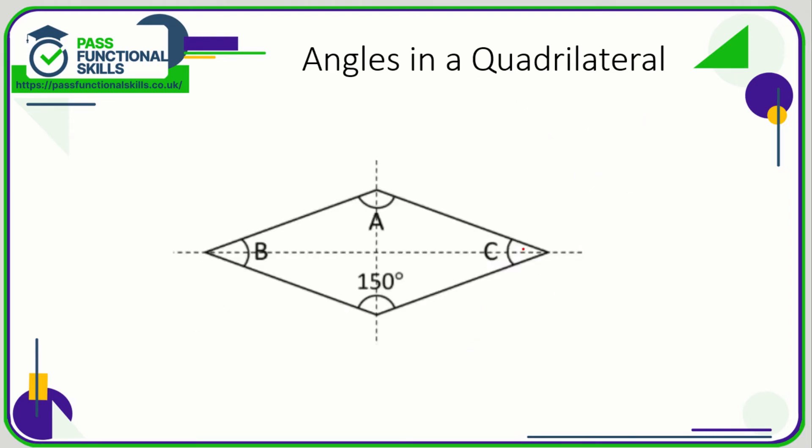You could have questions where there are lines of symmetry. So in this shape here we know that angle A is also going to be 150 degrees. If the line of symmetry goes across horizontally then this angle here is going to be exactly the same as the angle at A. So this angle here is also 150 degrees.